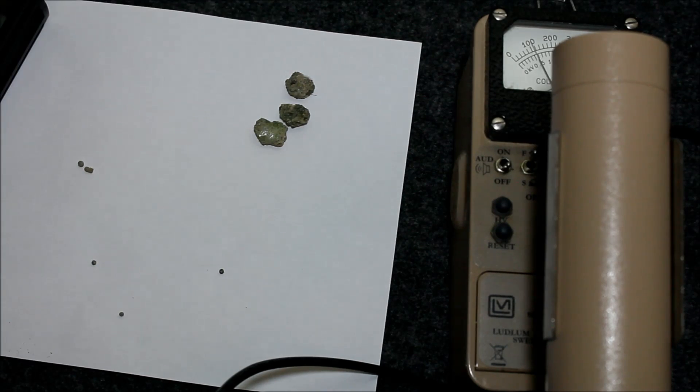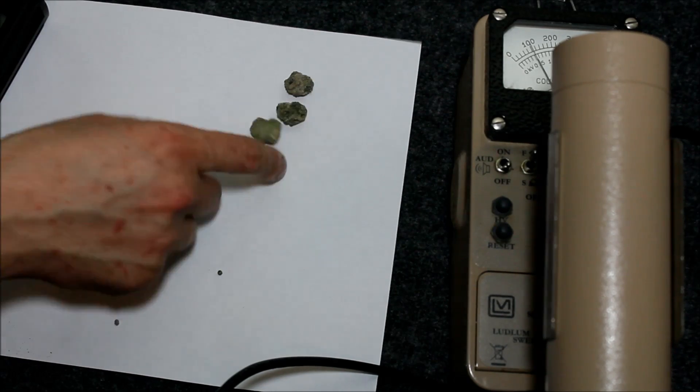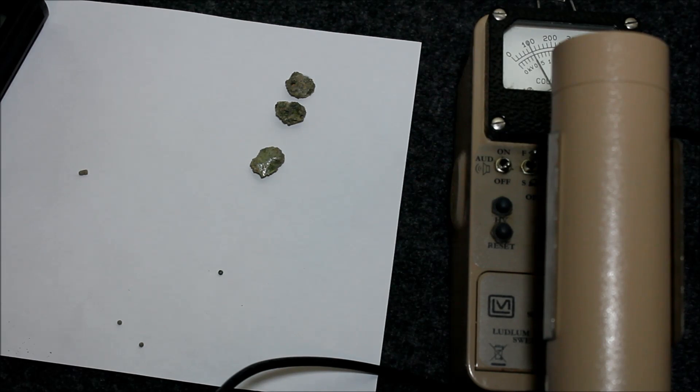Now we're going to look at them under the microscope. Up close. And we're going to do some gamma spectroscopy to see what's inside these things. Why are they radioactive? Let's go do that.